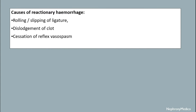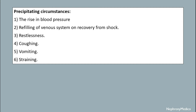Causes of reactionary hemorrhage include rolling or slipping of the ligature, dislodgement of clot, and cessation of the reflex vasospasm. Precipitating circumstances include the rise in blood pressure, refilling of the venous system on recovering from shock, restlessness, coughing, vomiting, and straining.